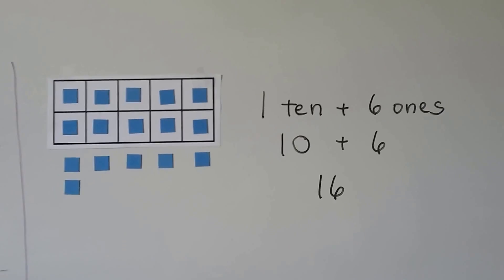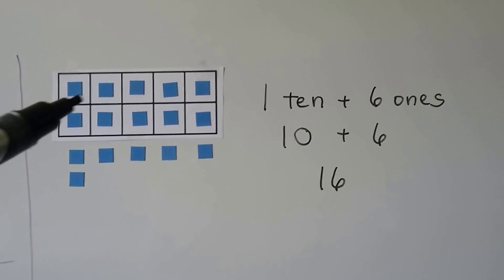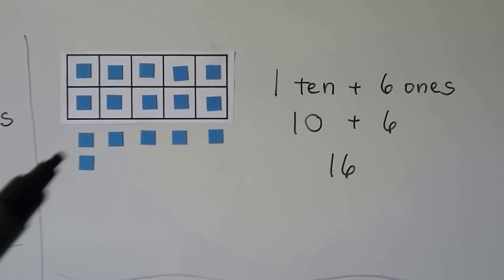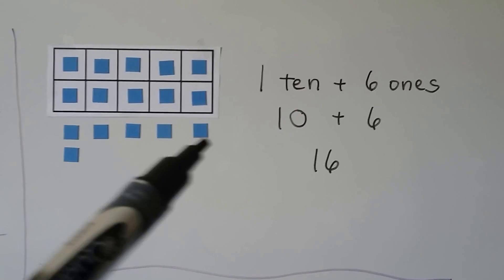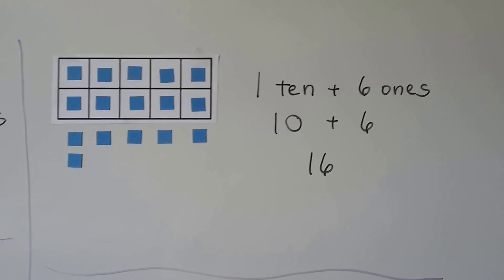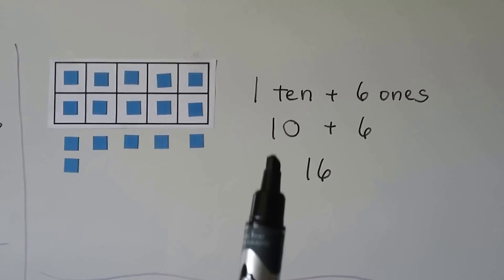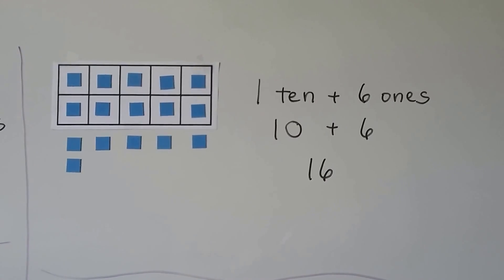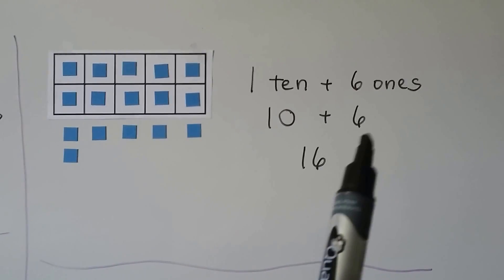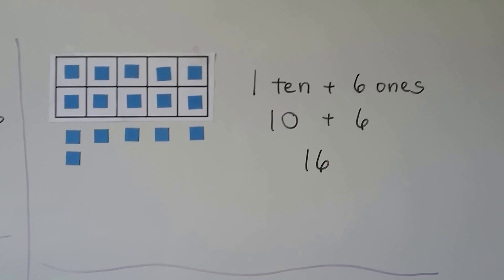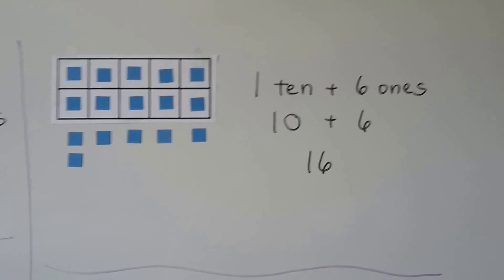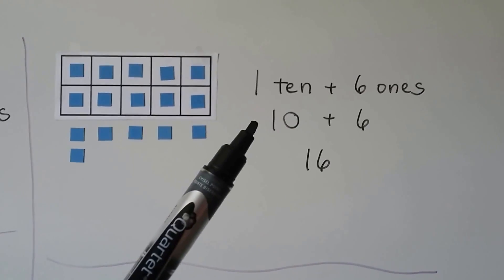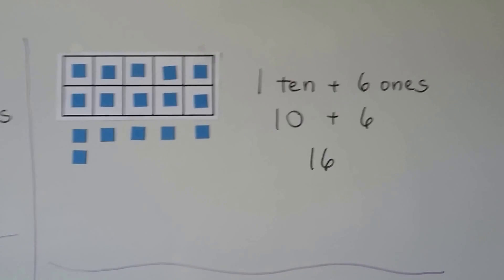Here we have a 10 frame and it's full, so we have a 10. And we have 1, 2, 3, 4, 5, 6 ones. We could write this as 1 ten plus 6 ones, 10 plus 6, or we can write it as 16. That's three different ways — 1 way, 2 ways, 3 ways.